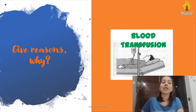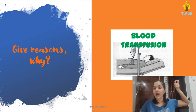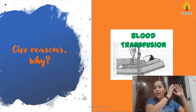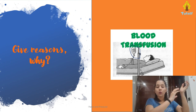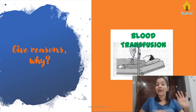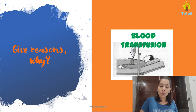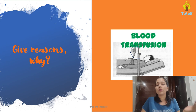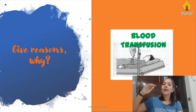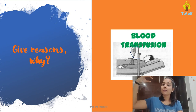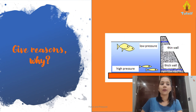Blood transfusion: the bottle that transfuses blood is placed at a greater height. This is because at greater height the liquid has high pressure, so the fluid is able to flow into the veins easily. If the bottle were kept at a lower level, the pressure would be low and it would not be able to enter the veins. At a higher level the liquid pressure is high and the force with which the fluid comes out is greater.